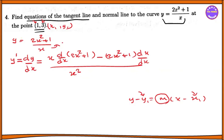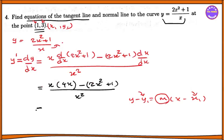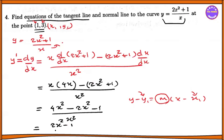So to differentiate, dy/dx: the derivative of 2x squared is 4x, the derivative of 1 is 0, so we get 4x. And for 1/x, we get minus 1 over x squared. So dy/dx equals 4x minus 1 by x squared. When we differentiate, m equals dy/dx, so m equals 4x minus 1 by x squared.